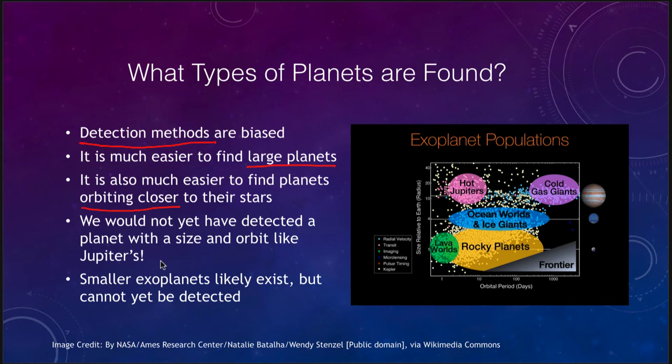In just a short observation window, we would not have found a planet with an orbit and size like Jupiter's. It's also likely that smaller planets exist but we just can't detect them yet — they don't tug on their stars enough, and they don't block enough of the star's light to be detected.